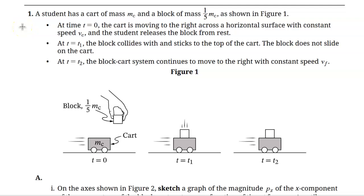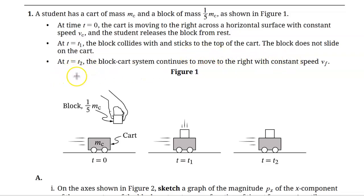In this video, we're going to go over a momentum FRQ for AP Physics 1. A student has a cart of mass MC and a block of mass 1/5 MC, as shown in Figure 1. At time t=0, the cart is moving to the right across a horizontal surface with constant speed VC, and the student releases the block from rest. At t=t1, the block collides with and sticks to the top of the cart. The block does not slide on the cart. At t=t2, the block-cart system continues to move to the right with constant speed VF.